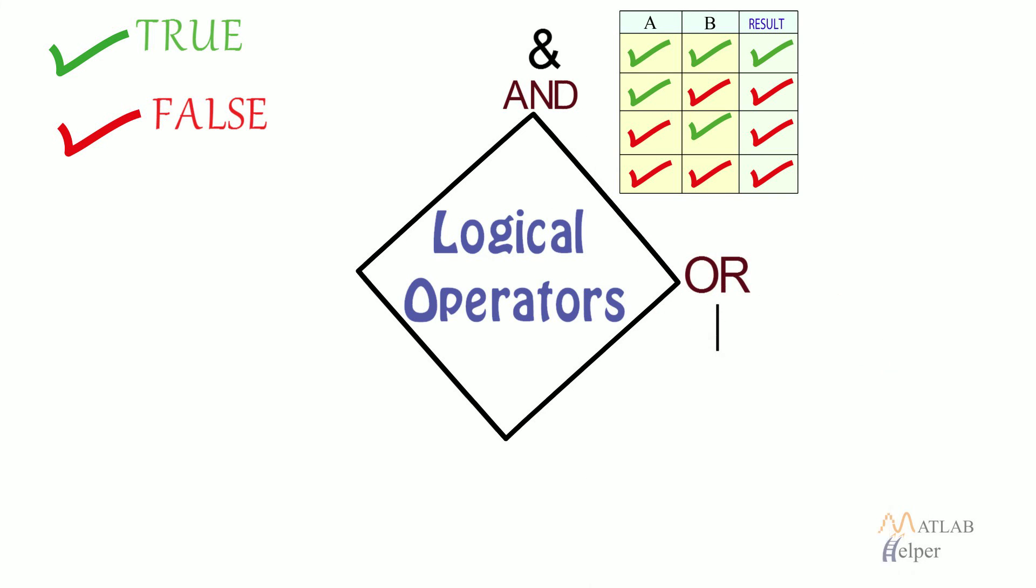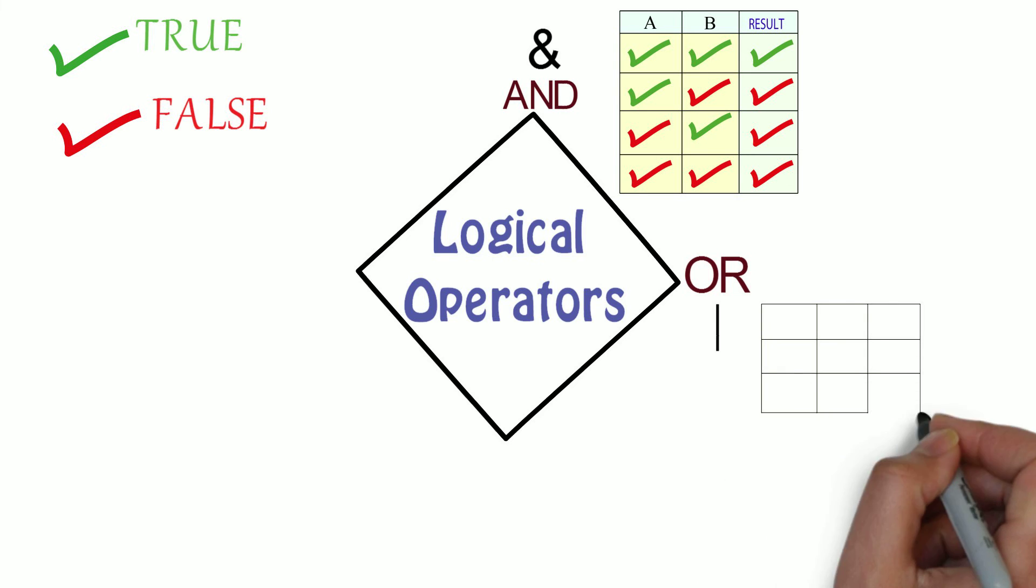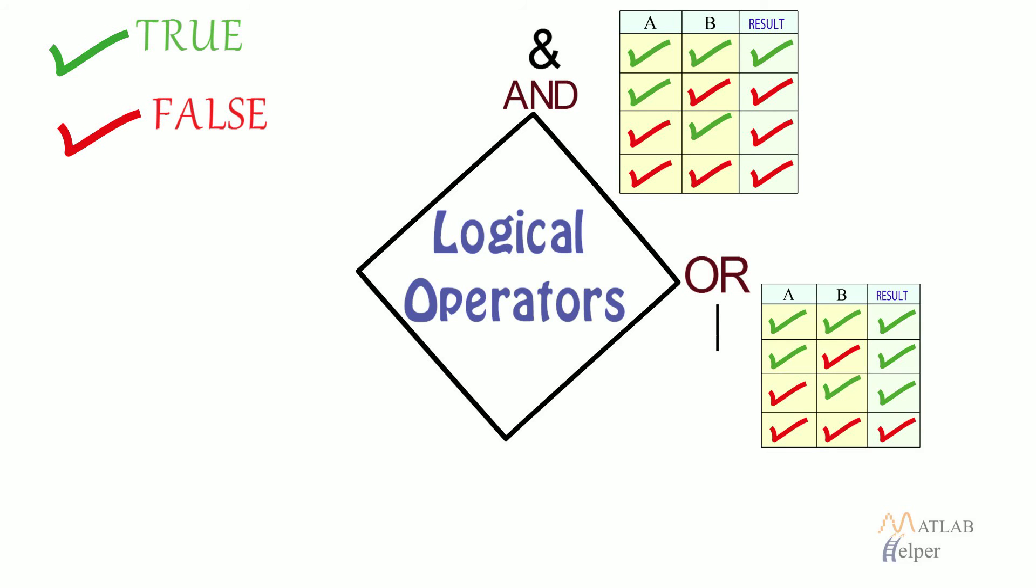Logical or: The result of A or B is false when A and B both are false, else true.